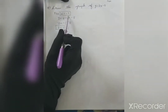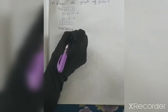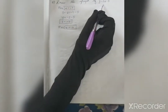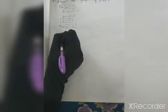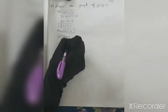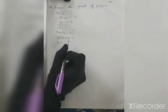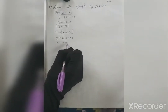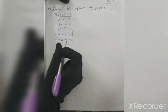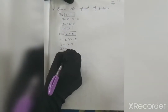Now I will substitute x is equal to 0. You can choose any of the points according to your wish. When I substitute x is equal to 0 in the equation, y is equal to 2 into 0 minus 5. Two zeros are 0, so 0 minus 5 is minus 5. So when x is 0, y is minus 5.